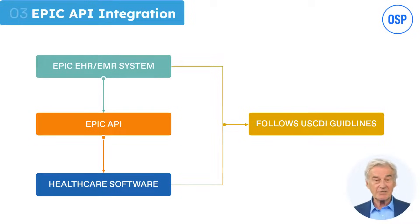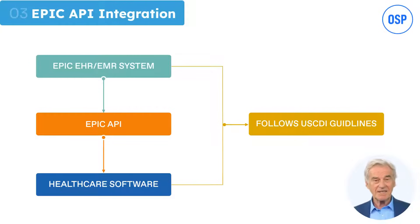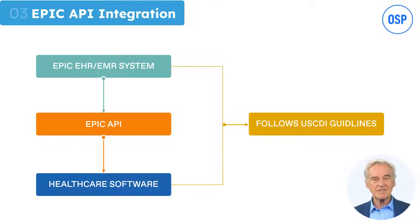With the support of FHIR, the Epic API can exchange data over the web seamlessly. These standards are really crucial for software developers, as they create scope for integrating Epic with different applications. As a developer, you must keep this in mind.